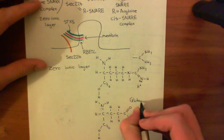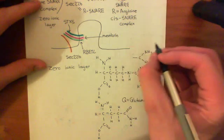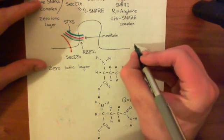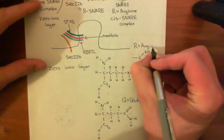which has the single letter amino acid code Q. So Q means glutamine. And the single letter amino acid code for arginine is R.